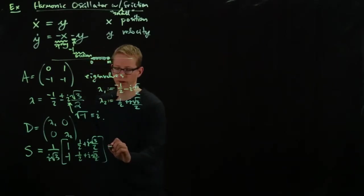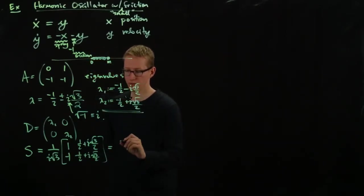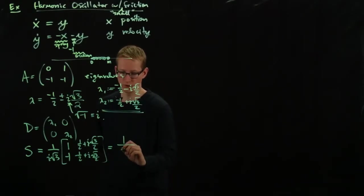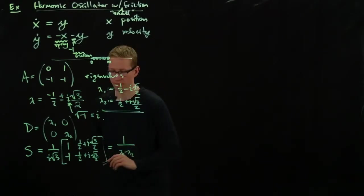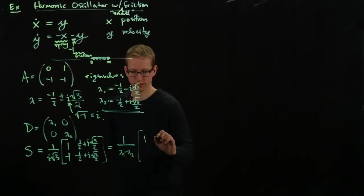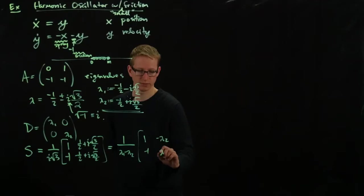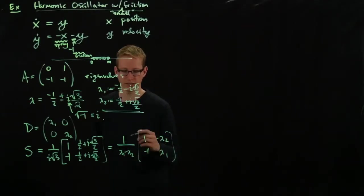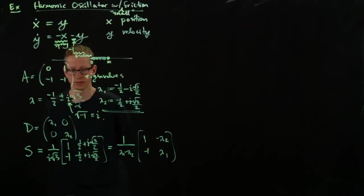So in terms of our eigenvalues here, we can actually write this as 1 over lambda 1 minus lambda 2, 1, negative lambda 2, negative 1, lambda 1. And I'll occasionally use this form to simplify some calculations.